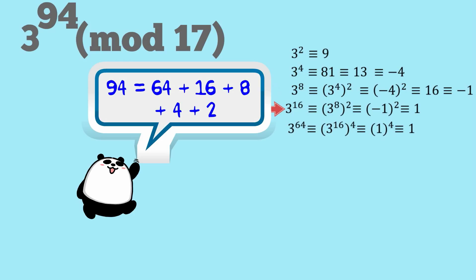Then 3 to the 16th, well, that's just 3 to the 8 squared. So that's negative 1 squared, which is equivalent to 1. And once we get to that point, then all the following ones will be 1. So now we're ready to solve the problem.